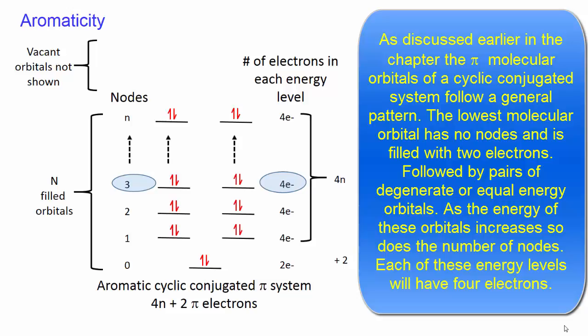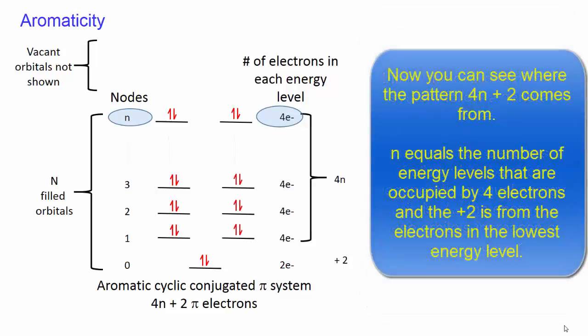Each of these energy levels will have four electrons. Now you can see where the pattern 4n plus 2 comes from. n equals the number of energy levels that are occupied by four electrons, and the plus 2 is from the electrons in the lowest energy level.